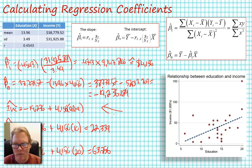When we see a change in education of one year of education, we expect to see an average increase of income of approximately $4,156.